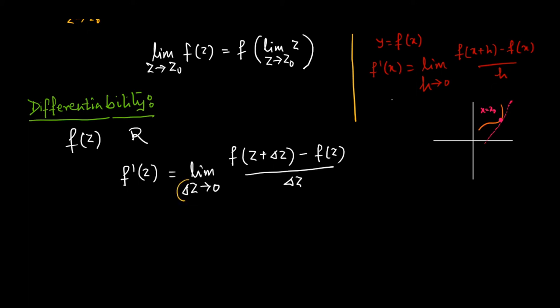For a clarification of this, you can refer to my video on limits. This delta z can approach 0 by any path, and the limit must exist independent of whichever path Δz approaches 0. If this happens, then we say that f(z) is differentiable at that point. If you need a particular point z₀, you plug in z = z₀ everywhere. We say f(z) is differentiable on the entire domain if it is differentiable at every point in the domain.